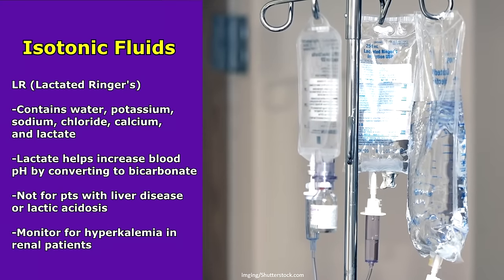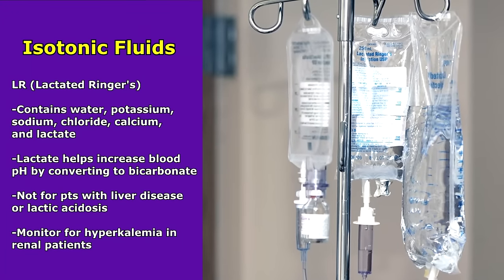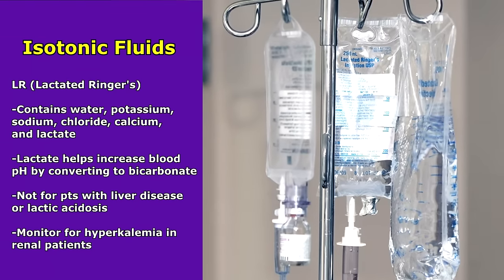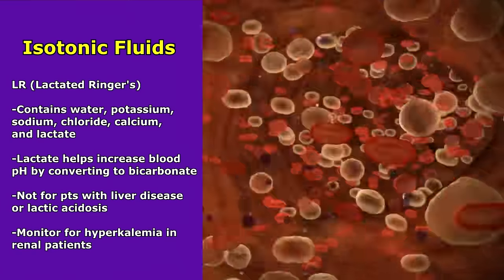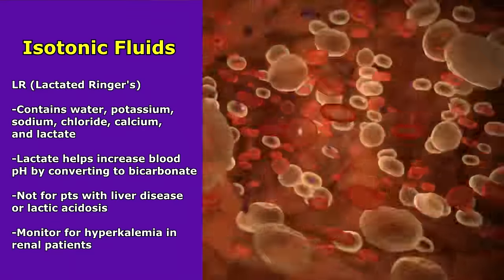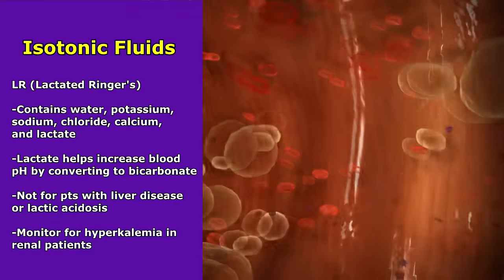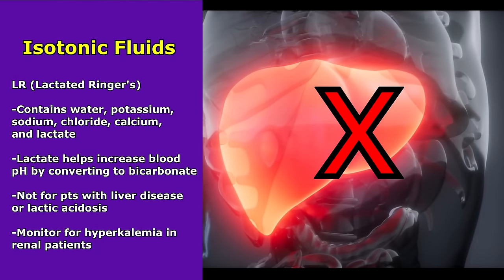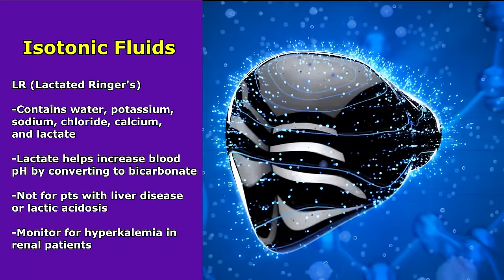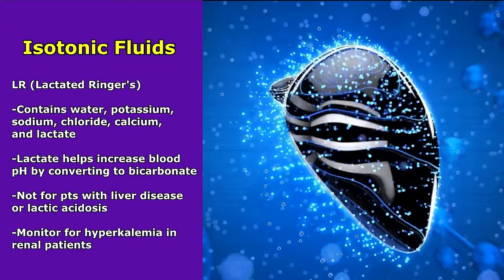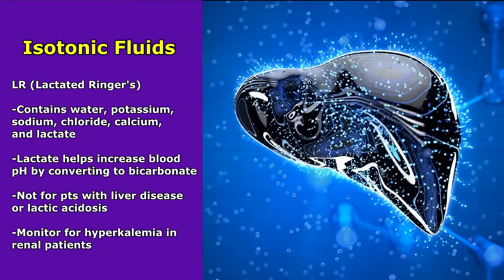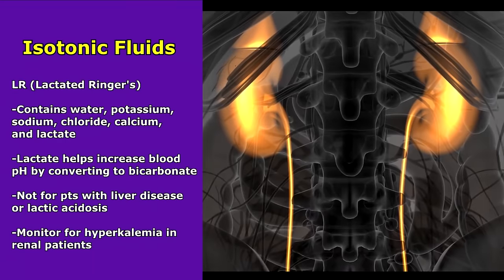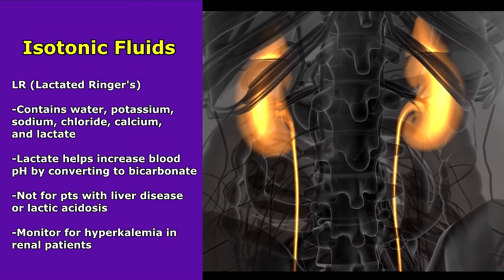Lastly, with lactated Ringer's (LR), this solution contains water, potassium, sodium, chloride, calcium, and lactate. The lactate can actually help increase the blood's pH by converting to bicarbonate, which is helpful whenever we have acidotic conditions like mild cases of metabolic acidosis. However, LR is not for patients with liver disease, since the liver converts lactate to bicarbonate, or for patients experiencing lactic acidosis, because there's already a high amount of lactic acid in the body. Because it contains potassium, you want to monitor for hyperkalemia, especially if your patient has renal insufficiency.